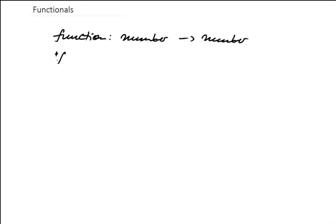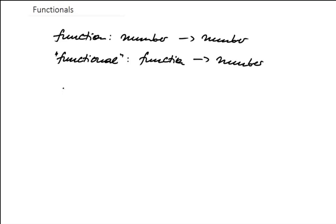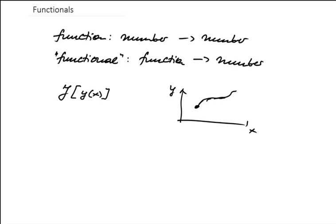A functional maps a function to a number. You can write that, for example, as J — I like to use these curly letters. So the argument of the functional J is a function, say y(x). Maybe between two boundaries x1 and x2 you have a function y(x), and the entire function is the argument of the functional J, which gives you a number.